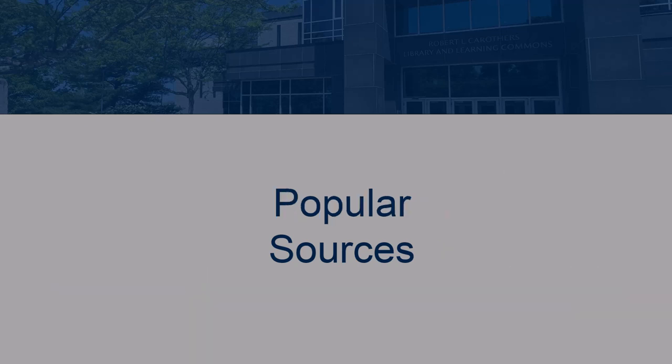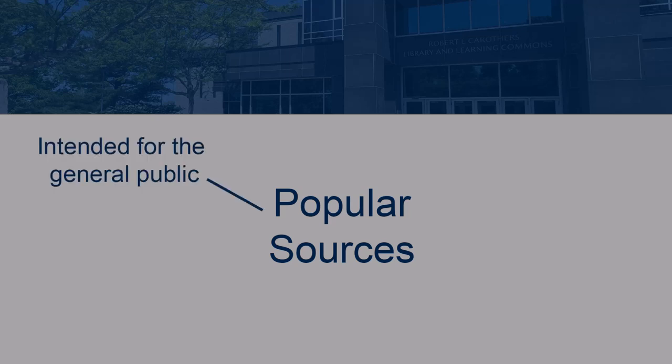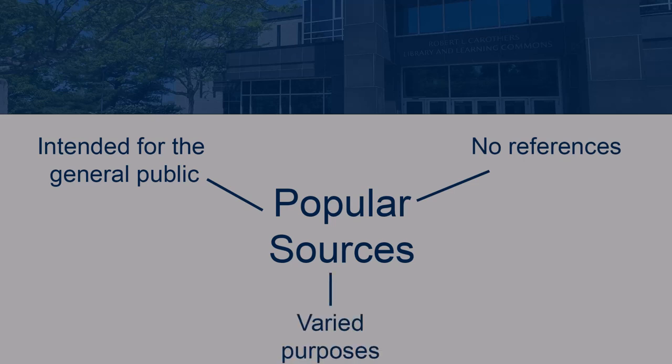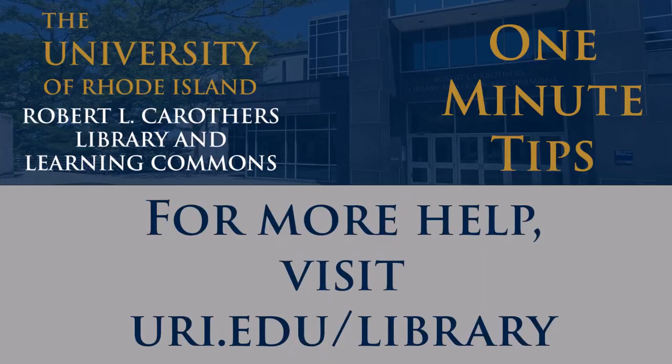A popular source, however, is a source that is intended for the general public. A popular source doesn't generally come with references or citations. Likewise, these sources can be written for a wide array of purposes and for an even wider array of audiences. When doing research, be aware of the differences in source types and choose your sources wisely.